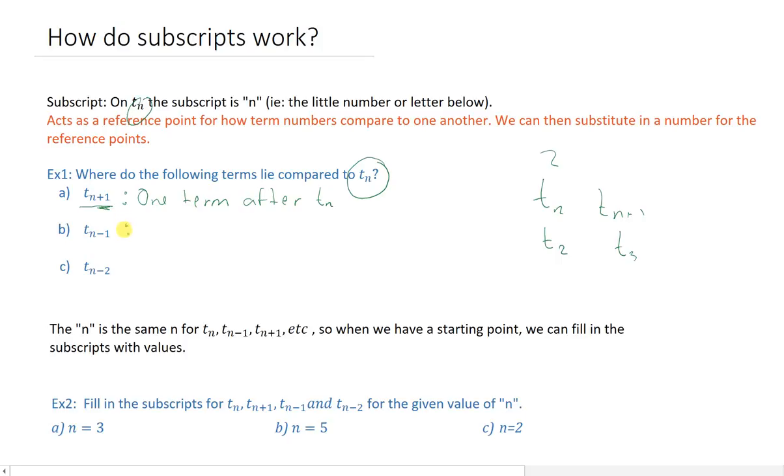Whereas going the other way, T_n-1, well that's one term before, because the reference point will be one less, so it'll be one term before T_n.